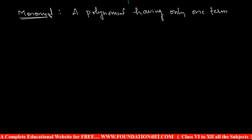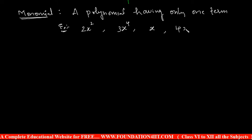A monomial has only a single term. For example: 2x², 3x⁴, or just x — these are all monomials. Even a single number like 4 is a monomial because we can treat it as 4·x⁰, which is still a single term. Mono means one — that is the meaning of monomial.